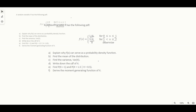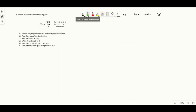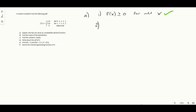Let's get started with part A. We need to explain why f of x can serve as a probability density function. For a PDF to be valid, we need two properties to hold. The first is that the PDF needs to be greater than zero for all x. This is very obviously true just by looking at the PDF — it's only ever one quarter, three quarters, or zero, so it's never going to be less than zero for any value of x.